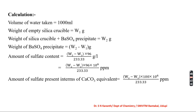The amount of sulphate can be expressed as (W2 − W1) × 96 × 10⁶ ÷ 233.33. It may also be expressed in terms of calcium carbonate equivalent: (W2 − W1) × 100 × 10⁶ ÷ 233.33. In this way, we can gravimetrically determine the sulphate content present in the water sample. Thank you.